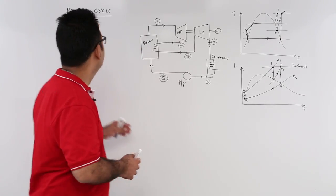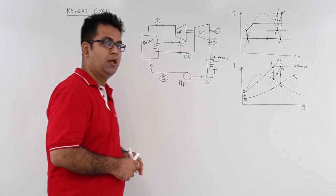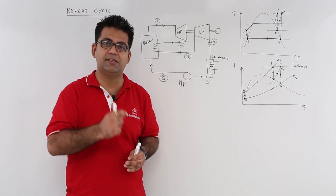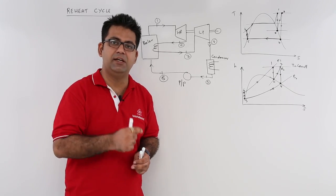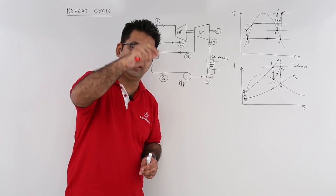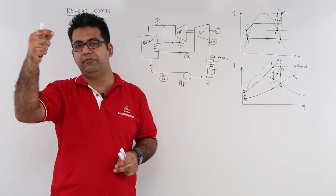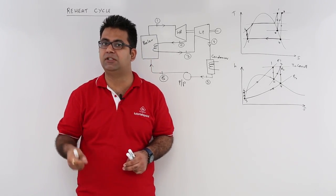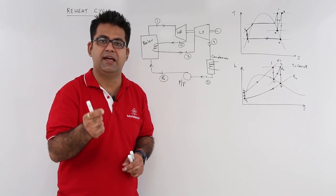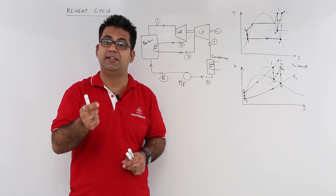Now let's talk about the reheat cycle. Why do we want to use a reheating cycle? When expansion takes place in the turbine from saturated or superheated state, it falls into the wet region. The steam after expansion has wet particles with moisture in it, and that moisture is harmful for the turbine blades—it can cause erosion and rusting. To avoid this, we use this cycle.